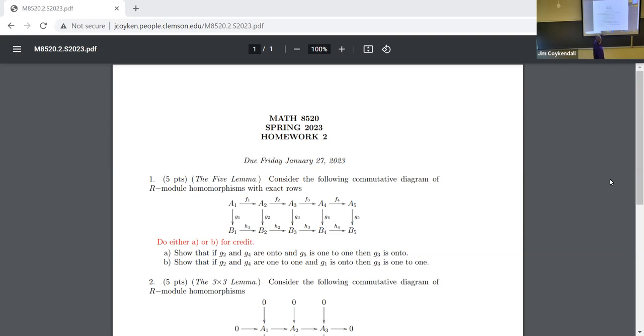We say the following commuted diagram with exact rows. I haven't really defined exact yet, but what it means to be a commutative diagram is no matter how you work your way through it, you get the same answer. What it means to be exact is the image of this map is actually equal to the kernel of the next map, and we'll talk about that in a bit.